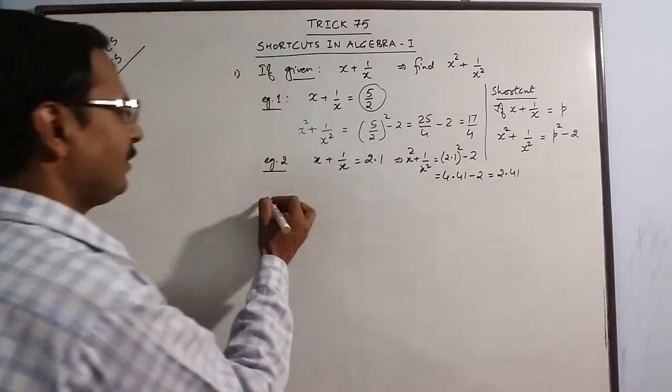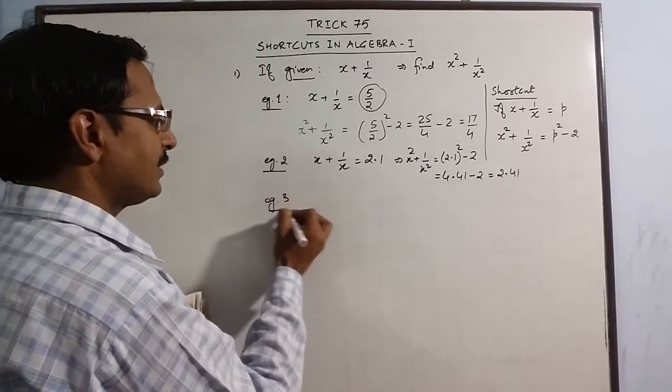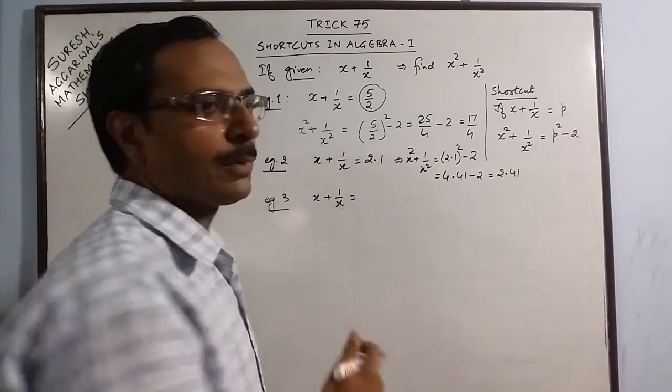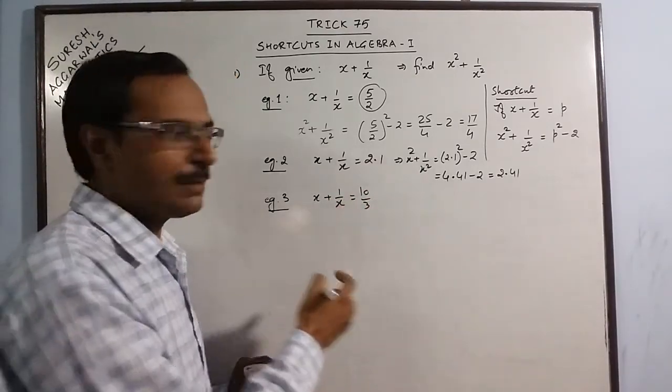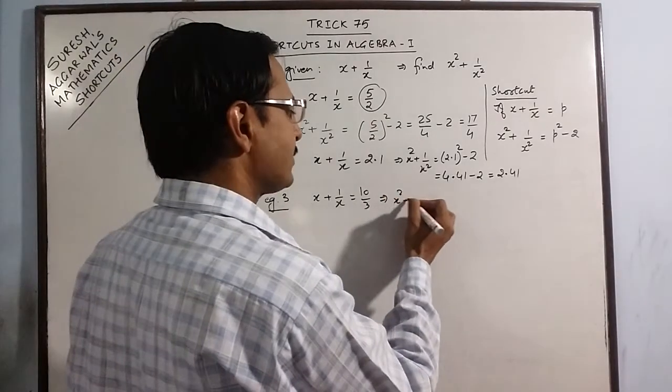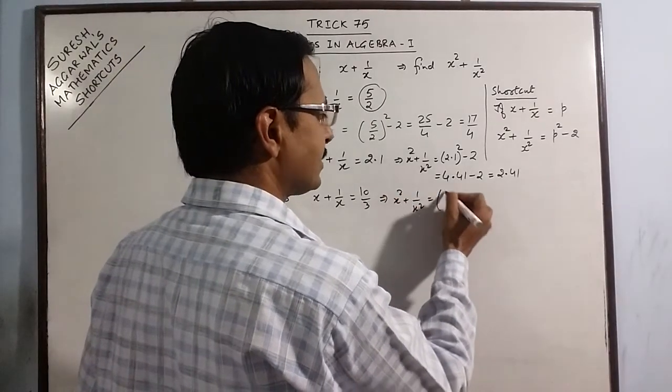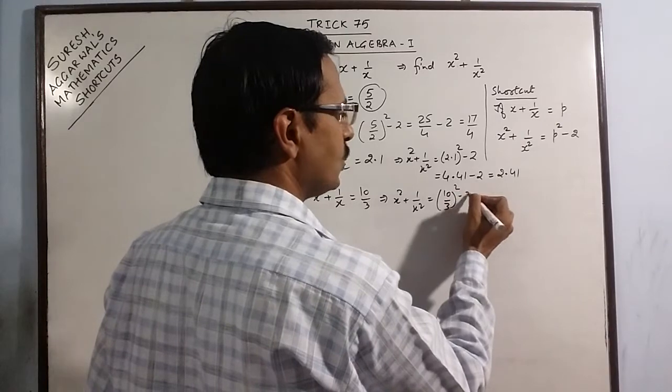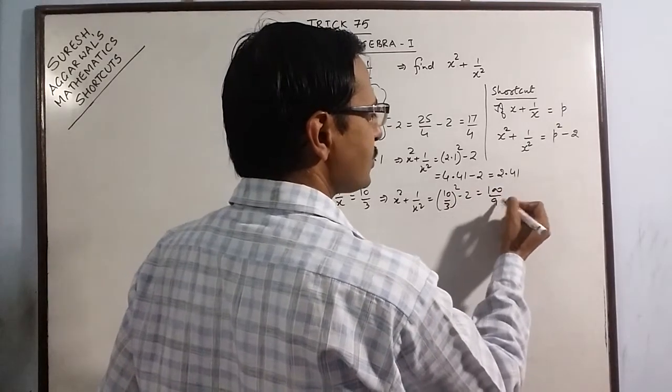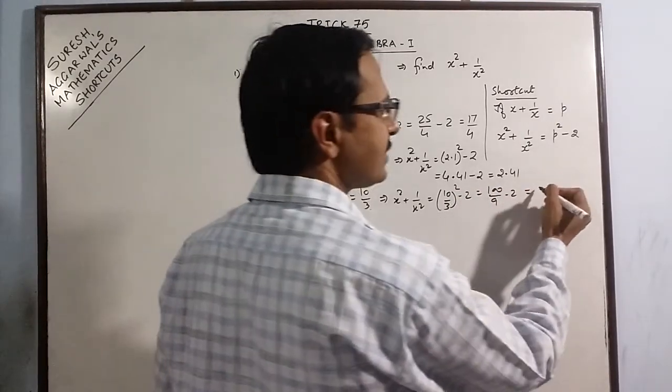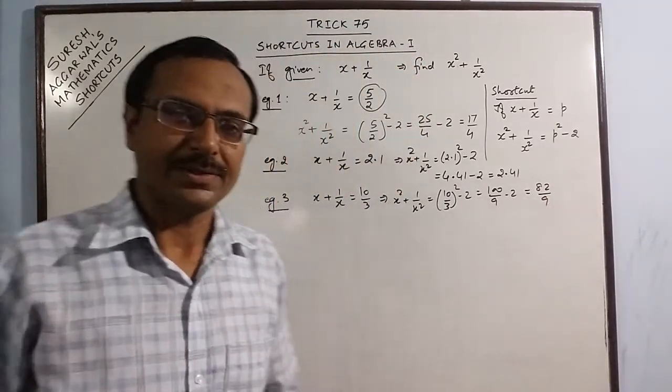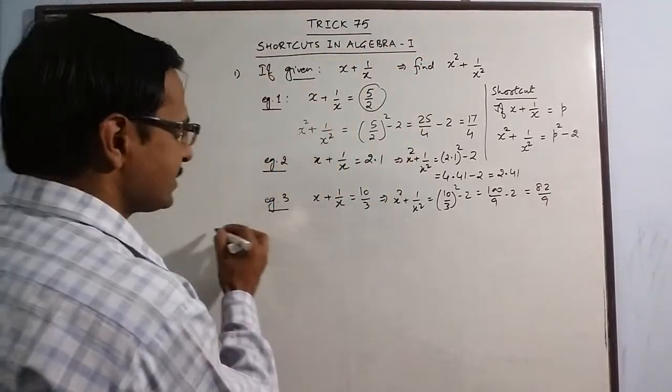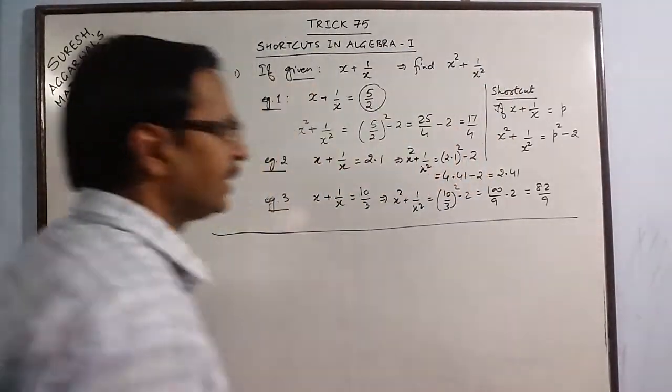Simultaneously, if you practice this method and if you get this type of problem in competitive exam, you can solve it very easily. If you have 10 by 3, the value will be just 10 by 3 whole square minus 2. This is 100 upon 9 minus 2, which is 82 upon 9. This is the first part of today's trick.